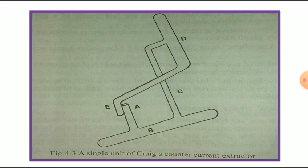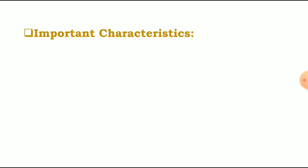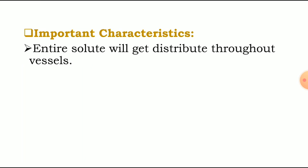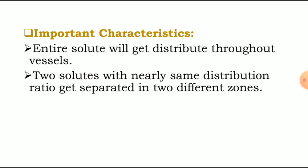The important characteristics of Craig's counter current extractor: first, the entire solute gets distributed throughout the vessels. Second, two solutes with nearly the same distribution ratio get separated into two different zones. When two solute components have a nearly same distribution ratio, they can be easily separated as they move through different zones — one going into the second unit, then the third, automatically getting separated.